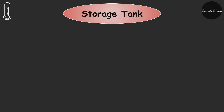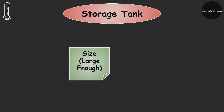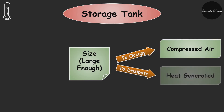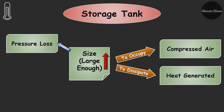The compressed air coming from the compressor is stored in a storage tank, which is a very important part of a pneumatic system. The size of the storage tank should be large enough to occupy the compressed air. It also helps to dissipate the heat generated. The pressure in the storage tank is kept higher than the operating pressure of the system to compensate for the loss of pressure in the transmission system.